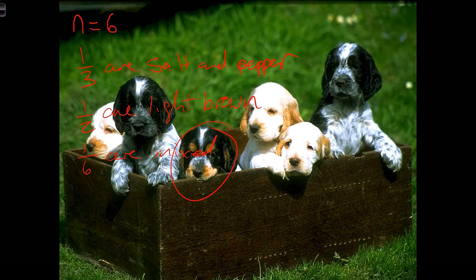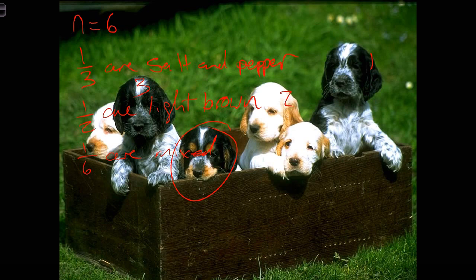Some of the puppies in this box are sitting down and some of them are standing up. It looks like we've got 1, 2, 3 puppies standing up. So we can say that half the puppies are standing and half the puppies are sitting. We could also go out and measure the weight of these puppies and give an average weight.